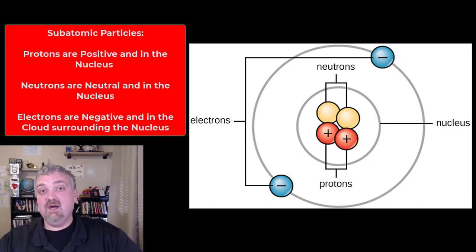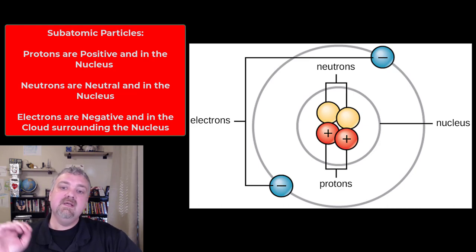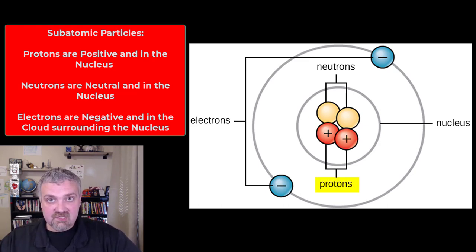Now atoms, as you can see here, are made of subatomic particles. The three that we talk about are protons, neutrons, and electrons. Protons are positively charged and in the nucleus, in the center of the atom. Electrons are negatively charged and they're in a cloud on the outside of the nucleus. Neutrons are neutral and they're also in the nucleus.